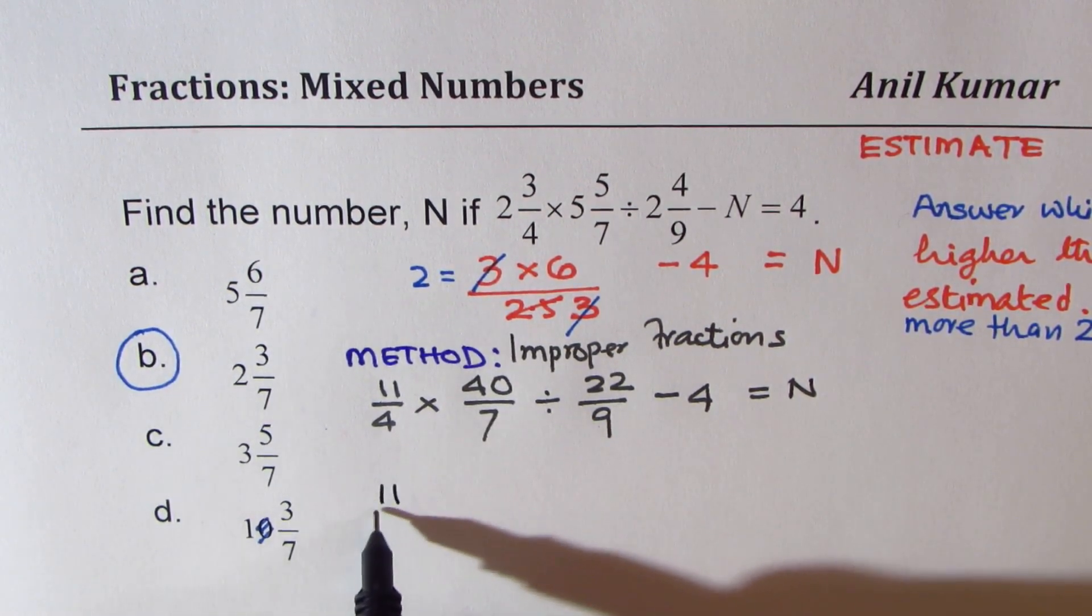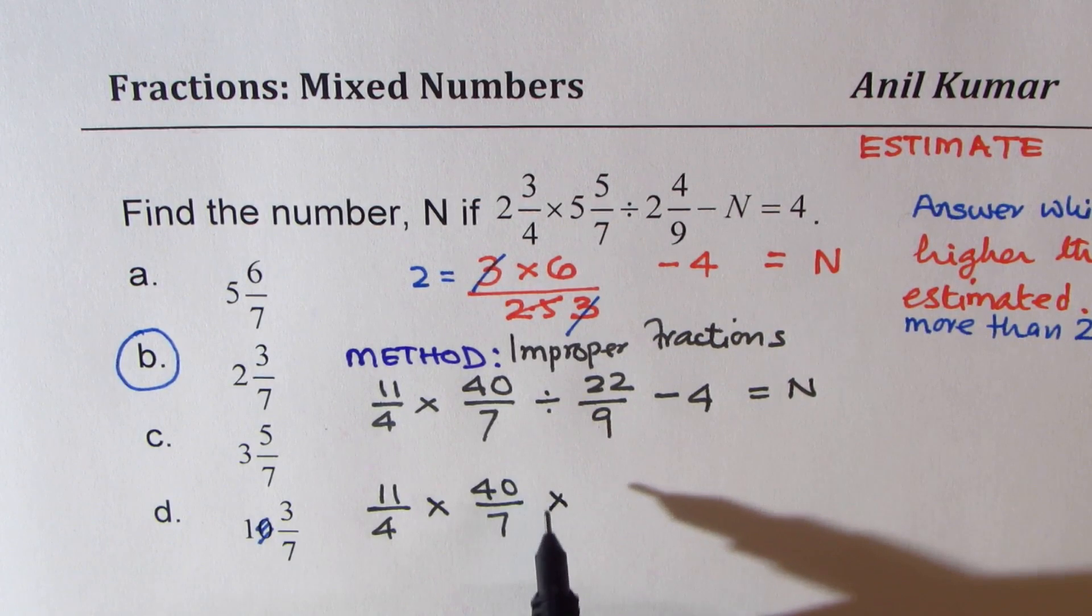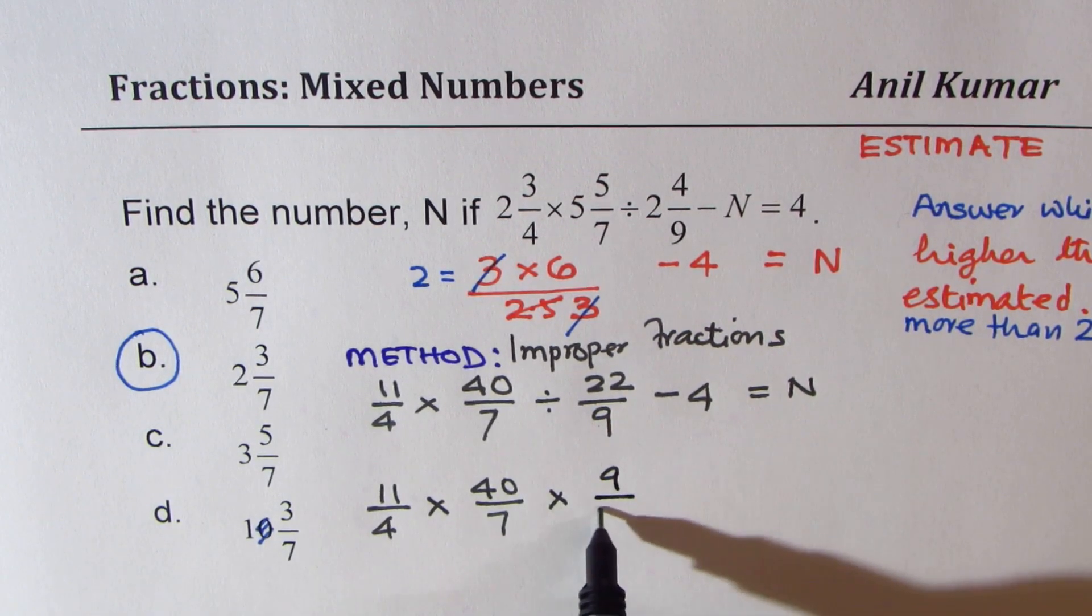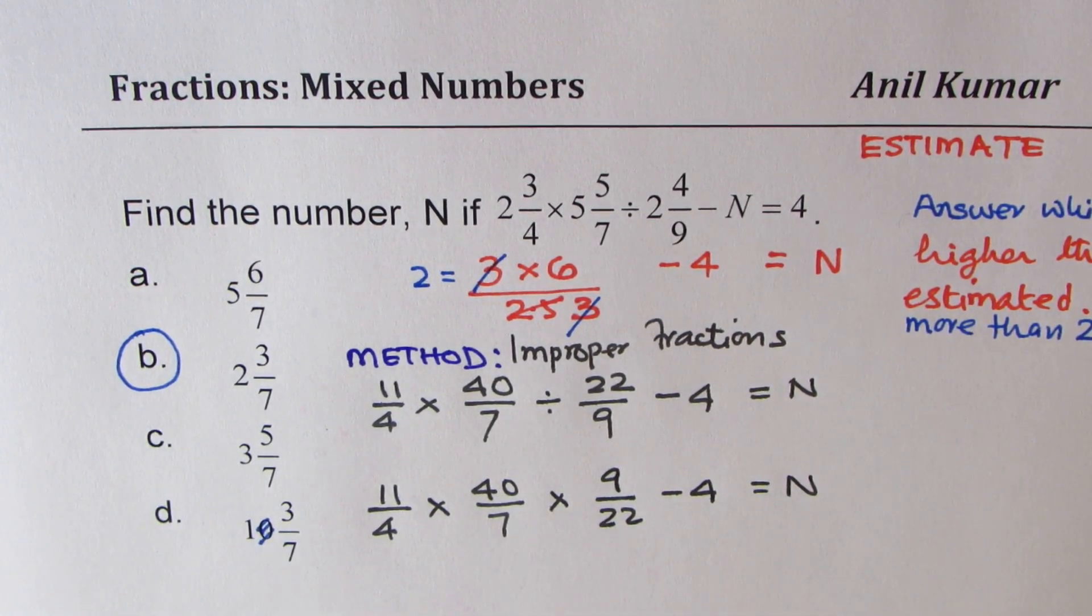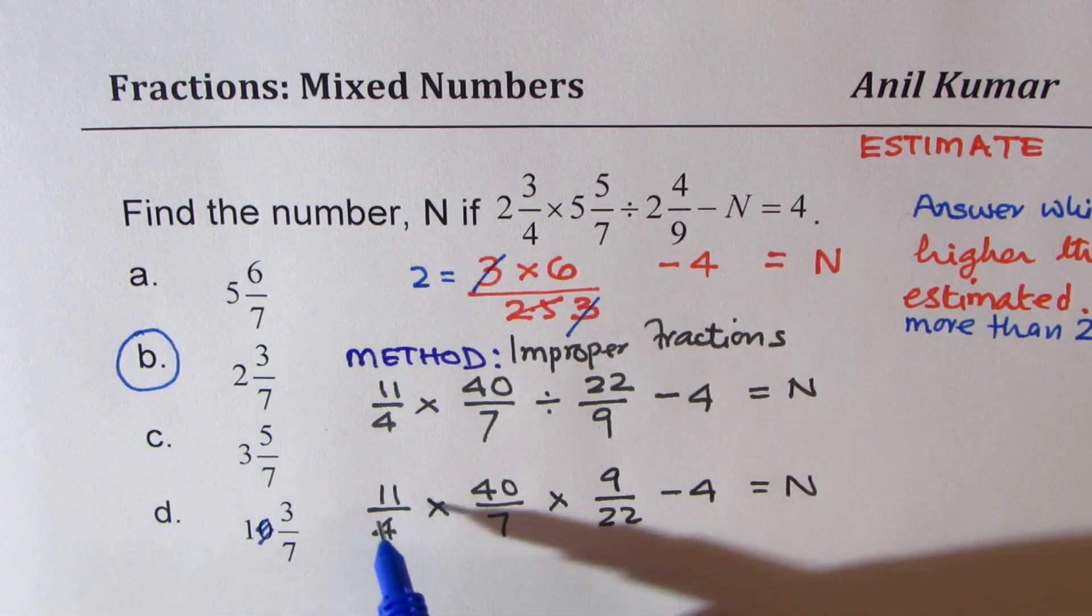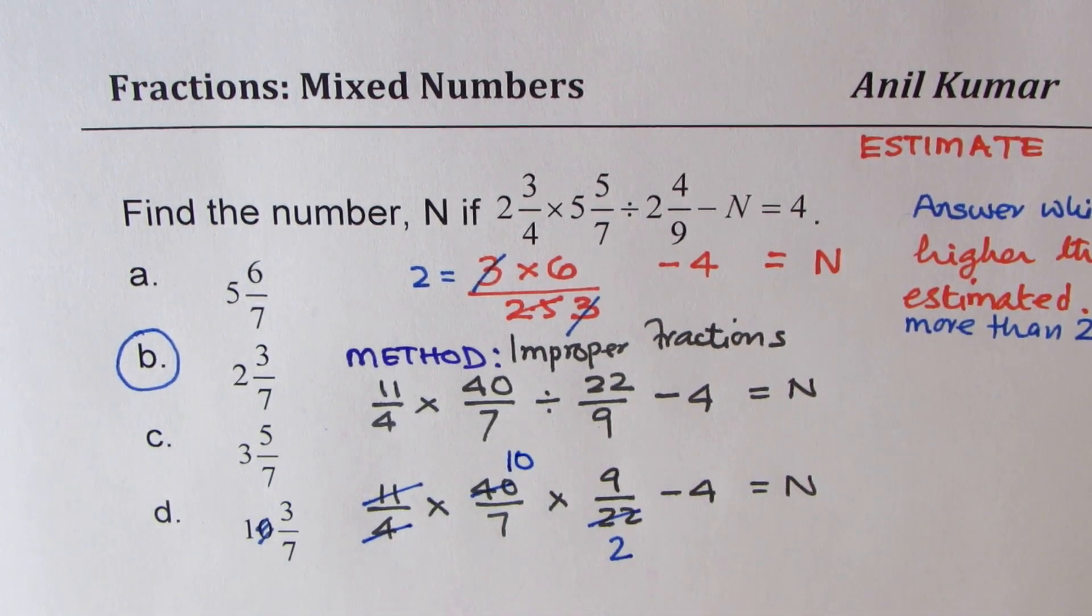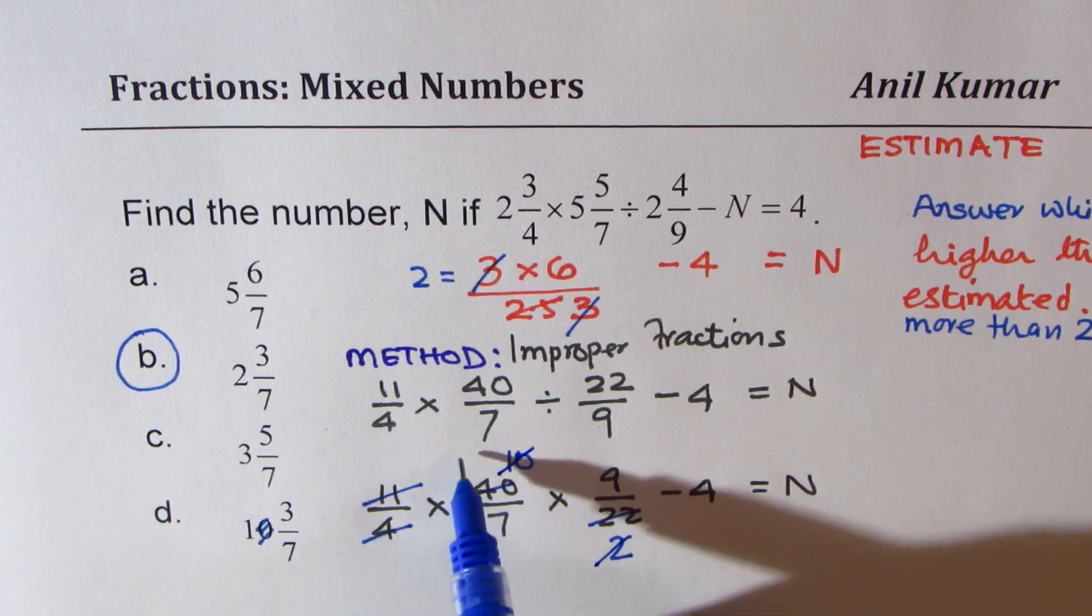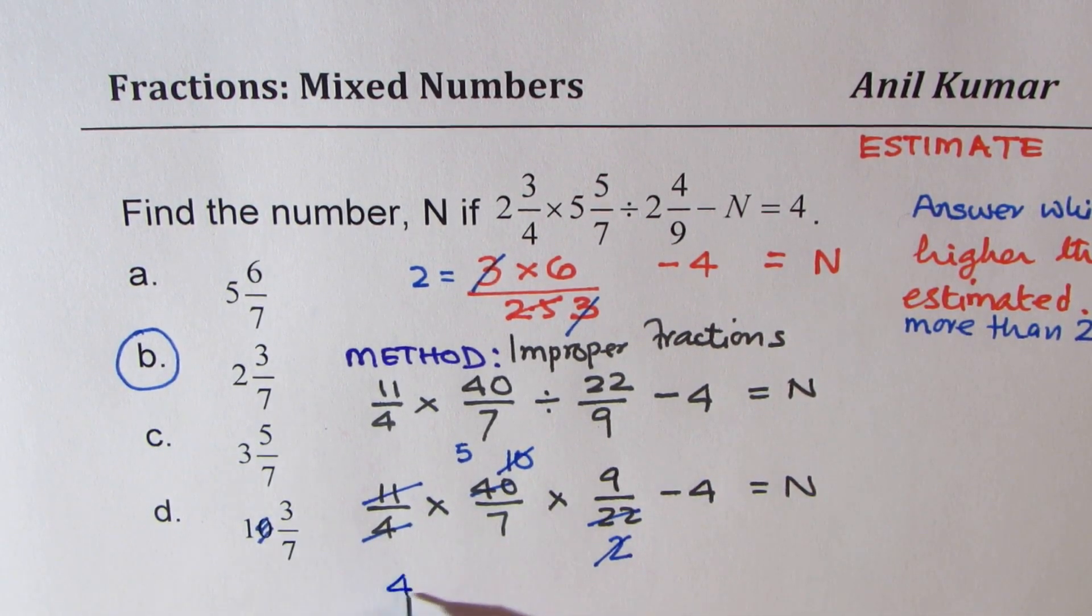So, these are the steps which you should do quickly. Now, let us go further. So, it is 11 over 4 times 40 over 7 times. Multiplication and division are reciprocal. So, we will write 9 over 22 minus 4 is equal to N. You don't have to do all these steps if it is a multiple choice question where time is critical. But now, simplify. See, 11 goes 2 times. 4 goes 10 times. And this too can divide 10 by 5.